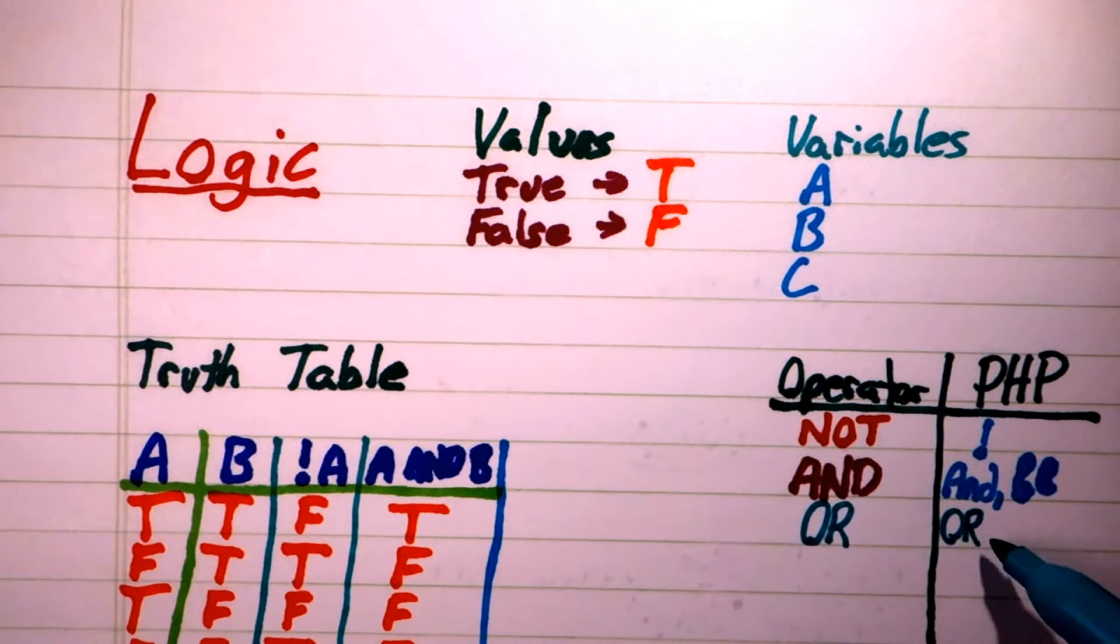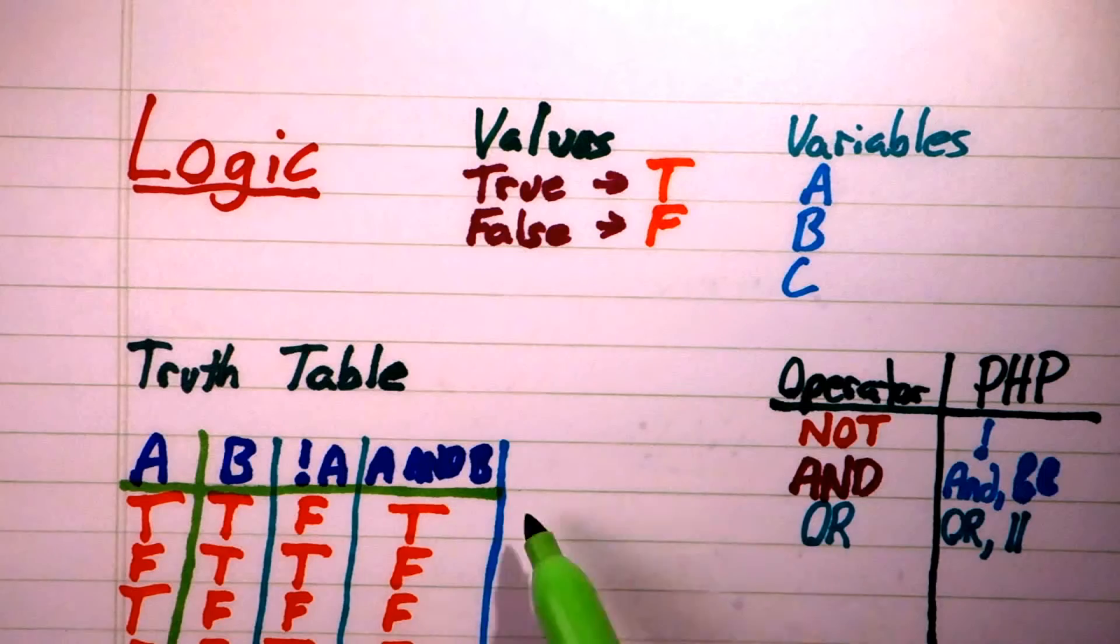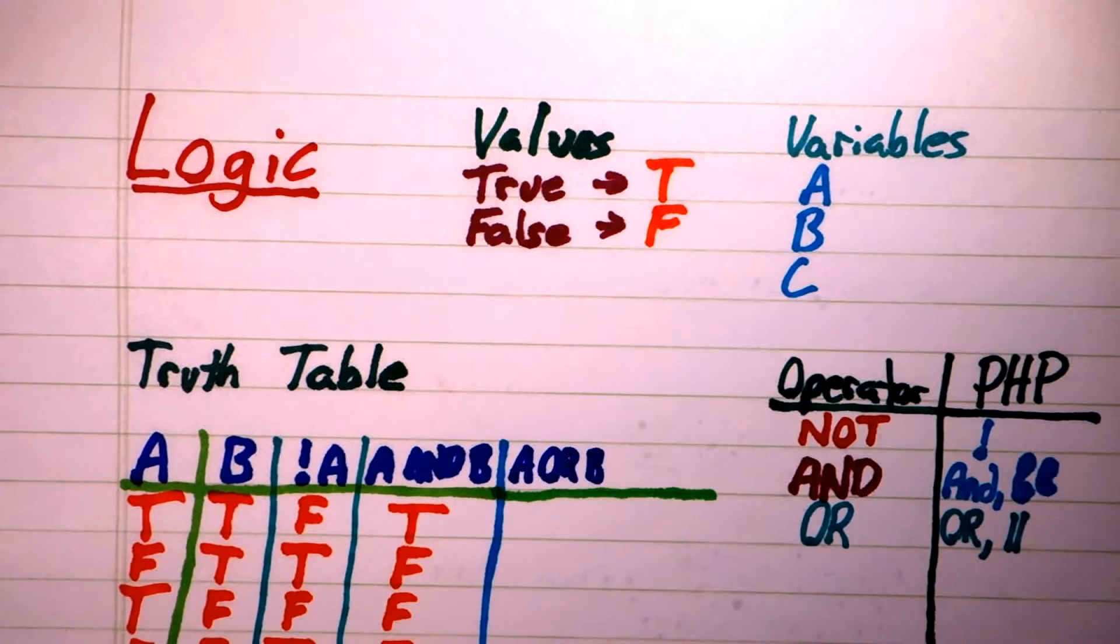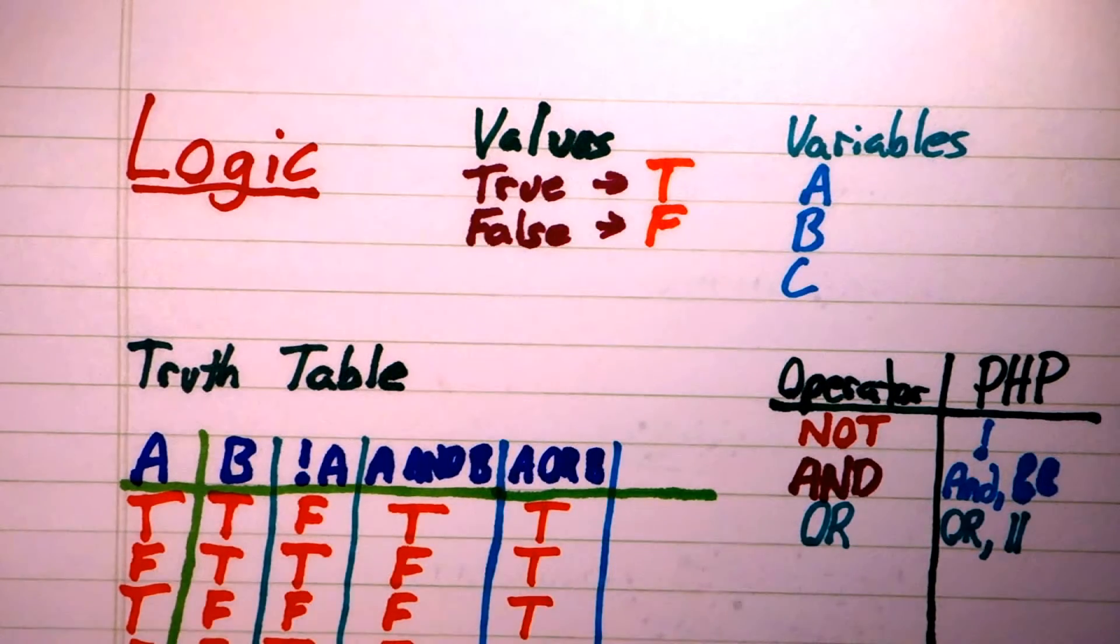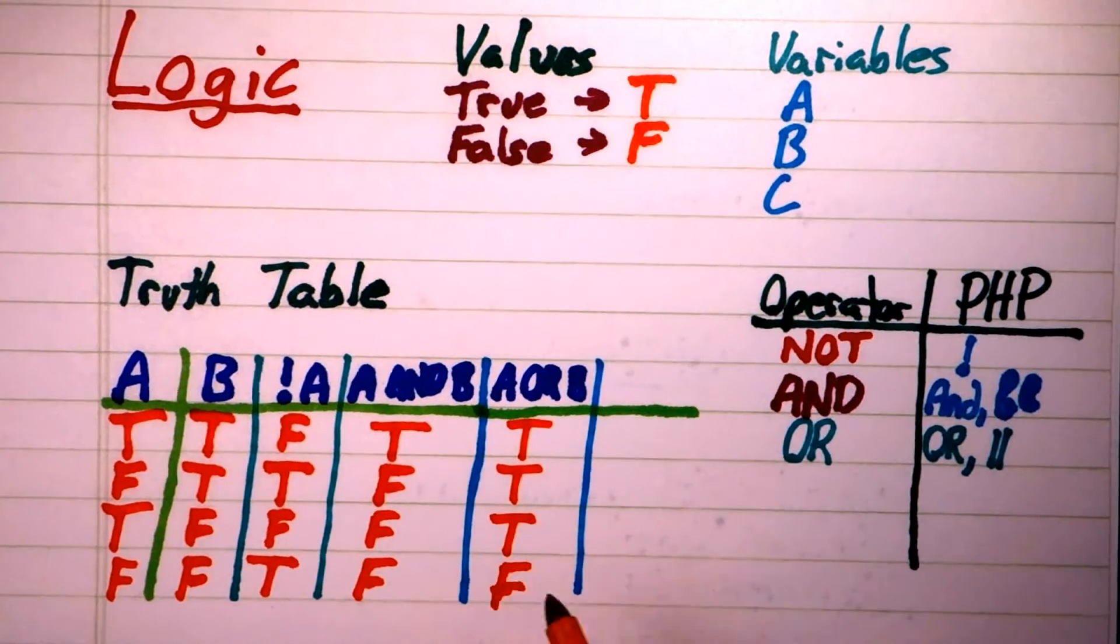Next comes the OR operator, which is another binary operator. It is true when any of the inputs are true. It is therefore only false when both of the inputs are false.